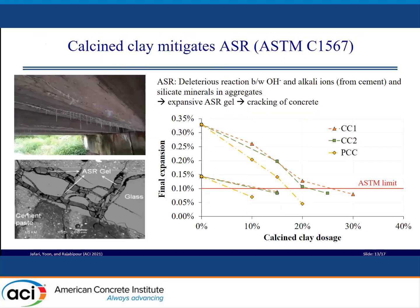The ability of calcined clays to mitigate alkali-silica reaction (ASR) is shown in the right figure. Two types of aggregates were used: a moderately reactive aggregate (R1) and a highly reactive aggregate (R2). The figure shows the final expansion versus calcined clay dosage, and it is observed that replacing cement with calcined clays reduced the ASR expansion. For highly reactive aggregate, 20% PCC, 25% CC2, and 30% CC1 were required to reduce ASR expansion below the failure limit. For moderately reactive aggregate, lower percentages suffice — 10% PCC, 15% CC1, or 15% CC2 was sufficient to mitigate ASR. The main idea is that lower replacement levels are required when using calcined clay with higher amorphous content.